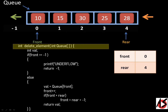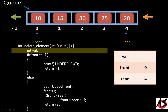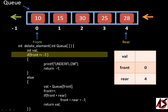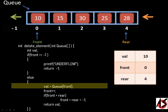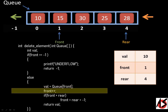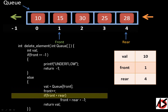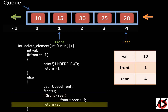Here we have the Queue array from which we try to delete an element. We take the variable val to store the value of the deleted element. First it checks the condition front equals minus 1. Since front is 0, the condition is false, so control moves to the else part. The value at index 0 of the Queue is stored in variable val, that is 10. Then front is incremented to 1. It checks the condition front greater than rear, which is 0 greater than 4, that is false, so no action is taken. The function returns value 10 and it is deleted from the Queue.